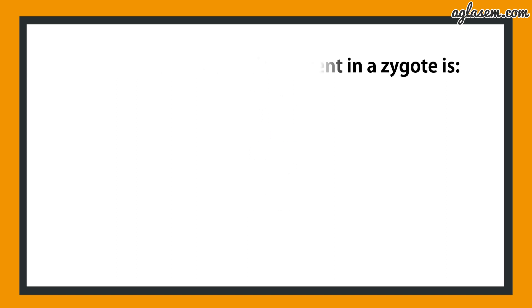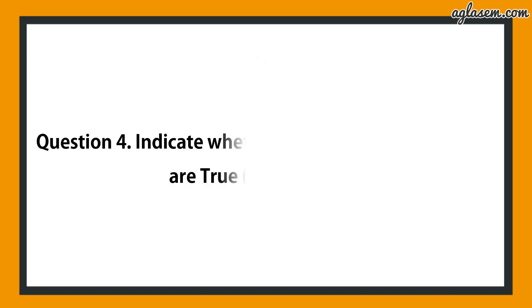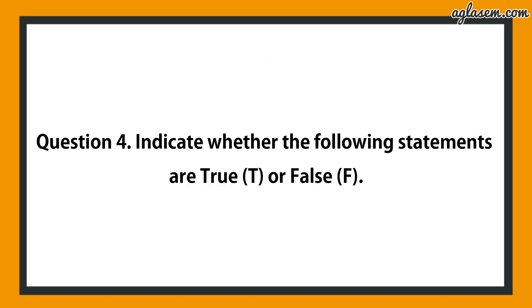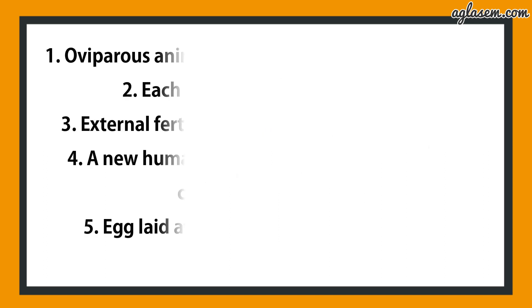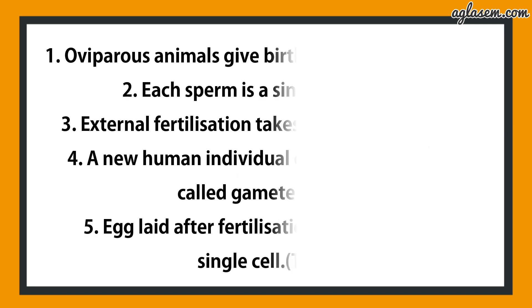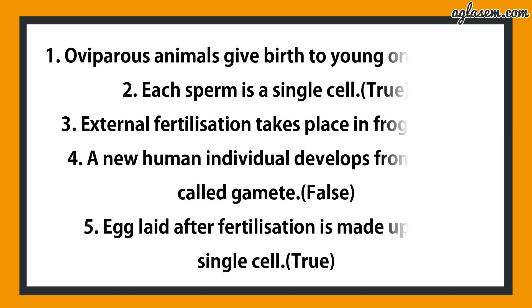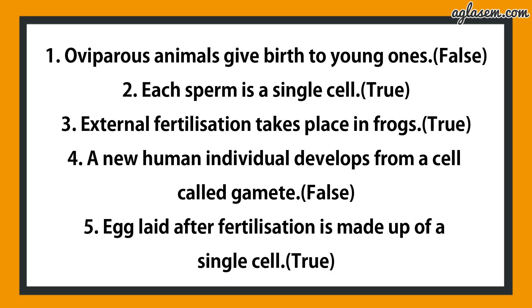Question number 4 says: indicate whether the following statements are true or false. First: oviparous animals give birth to young ones — answer is false. Second: each sperm is a single cell — answer is true.